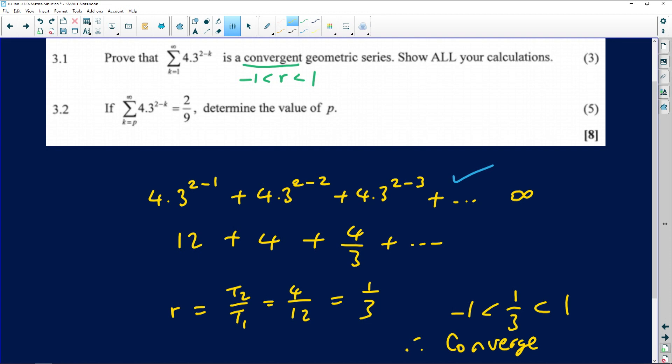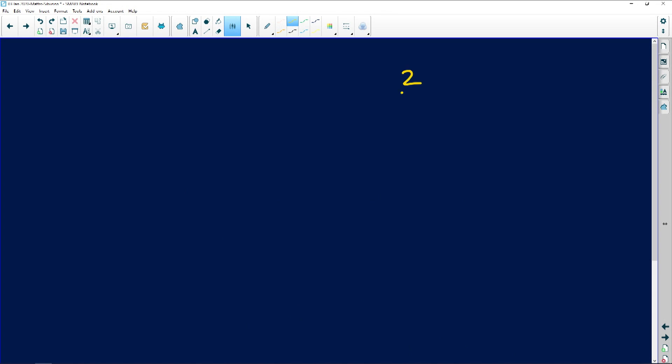So it's the same thing. Starting at p, the answer should be 2 over 9. So what are they saying? They're saying the answer is 2 over 9 to the sum to infinity. When you start this 4 times 3 to the power 2 minus p from k equals 1, it's actually k. From k equals 1 all the way up to infinity. And then you have k here instead of a p.